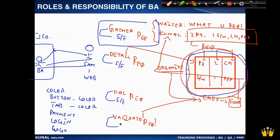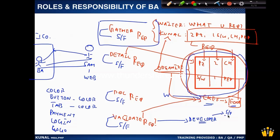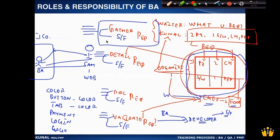Just as the waiter uses a template to organize requirements, a BA uses a template to organize software requirements — I'll show you that template when the real class starts. The BA also documents and validates the software requirements, then hands them over to the developer. The developer prepares the software based on the BA's requirements, the same way a chef prepares food based on the waiter's order. In real classes I'll cover different methods to gather, detail, validate, and document requirements.